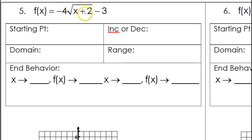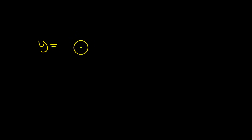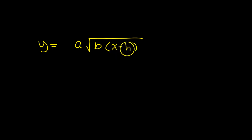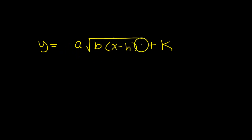Next we do problem number 5, skipping 3 and 4 because those are cube root problems covered in another video. Before number 5, let's talk about transformations in general for a square root function. Here is the general form: we can have an a value out front, a b value inside, an h value as minus h inside, and a k value on the end.